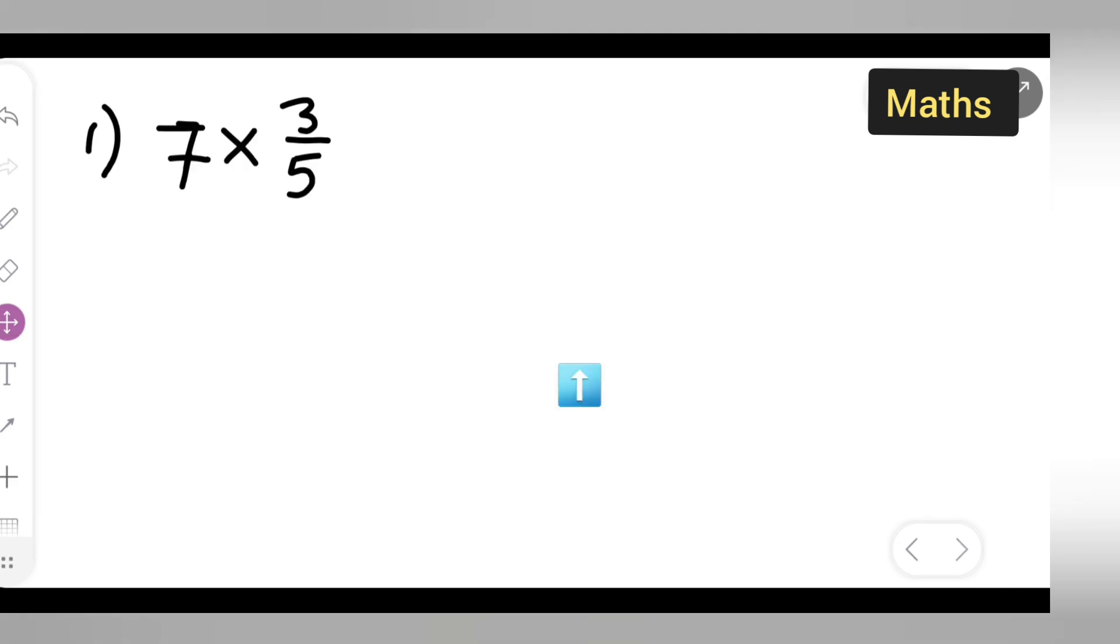So let us see. Now let us solve this in stepwise order. Write down 7 multiplied by 3 upon 5. Okay, write down this properly.